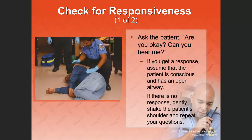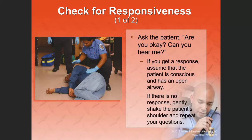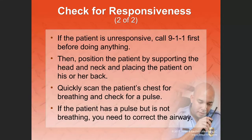Check for responsiveness — ask the patient, 'Are you okay?' If you find a patient not responding, introduce yourself: 'My name is Ryan Rufus, I'm an EMR, I'm here to help. Sir, can you hear me?' If you get a response, assume the patient is conscious and has an open airway — if the patient is talking to you, their upper airway is patent. If there is no response, gently shake the patient's shoulder and repeat the question. If still no response, the airway may be compromised.